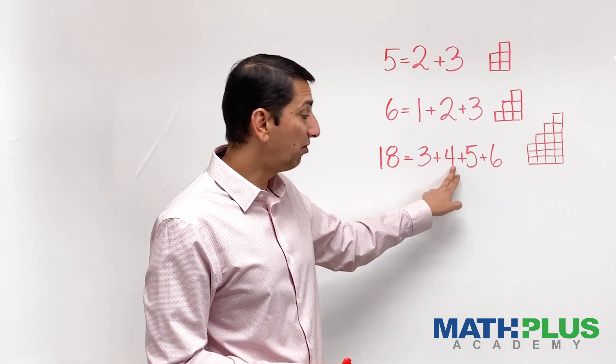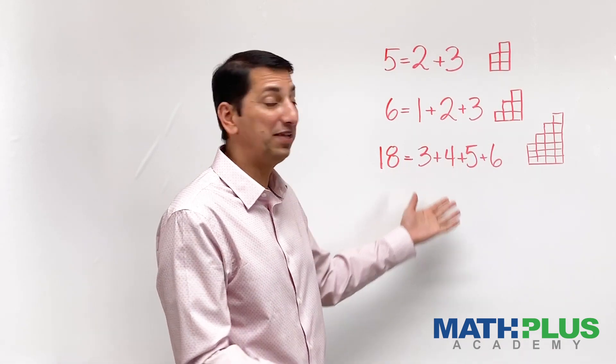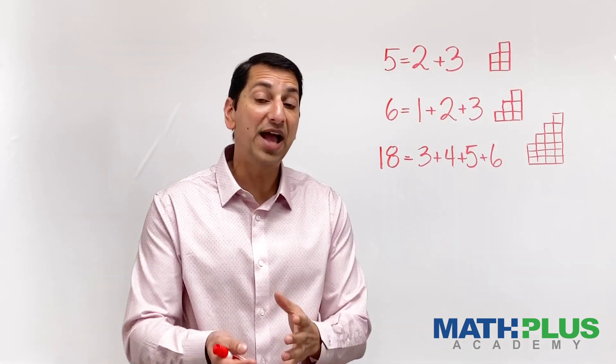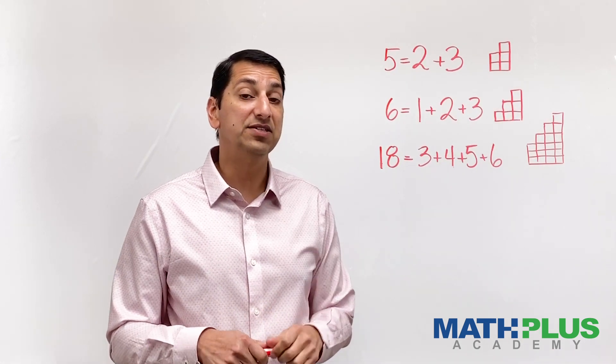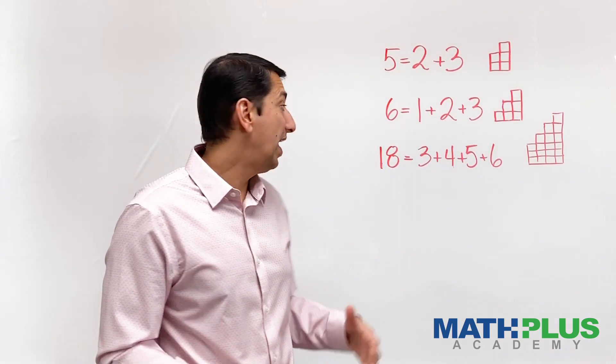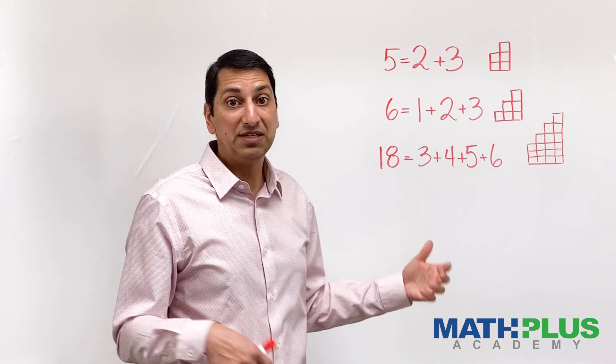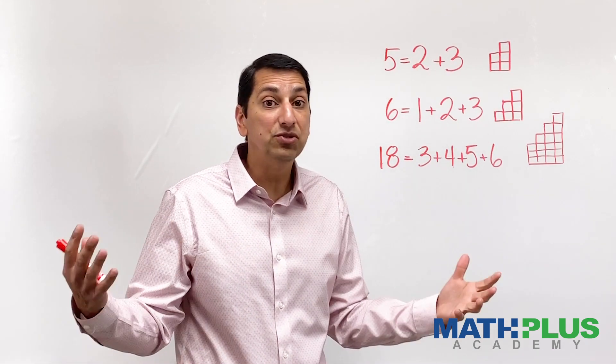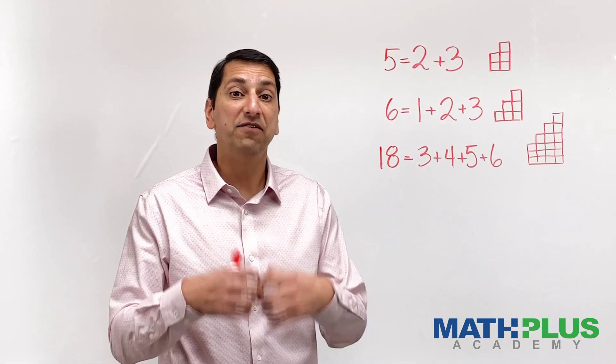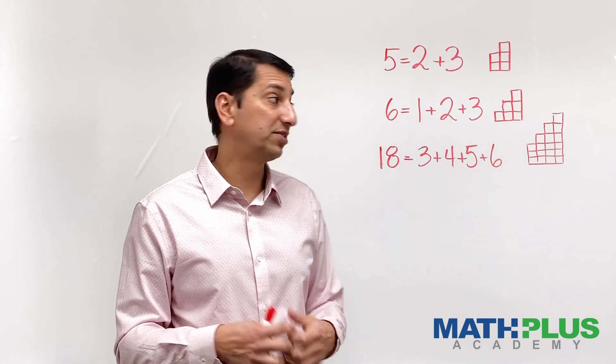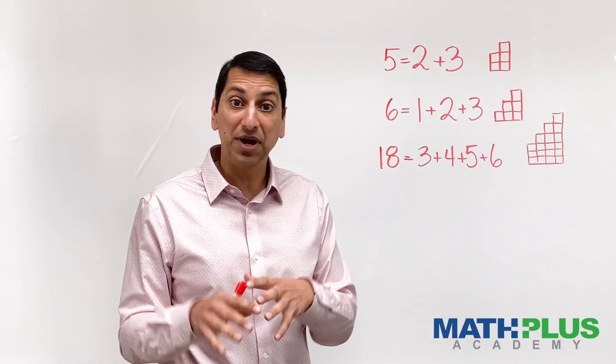So, 3 plus 4 plus 5 plus 6. I'm not skipping any numbers. And so that is actually the challenge here: can you write any number you choose, 7, 12, 42, as the sum of consecutive whole numbers? So that is going to be what I want you to try.